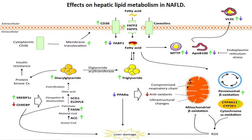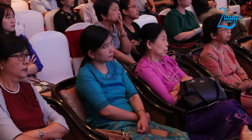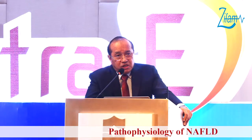What happens to lipid metabolism in non-alcoholic fatty liver disease? As I have told you, the fatty acids are transported into the hepatocytes by fatty acid transport proteins. CD36 and caveolins also transport fatty acids into the hepatocytes, where they are bound to fatty acid binding proteins. If there is a mutation in these transport proteins, there is a disturbance in lipid homeostasis.